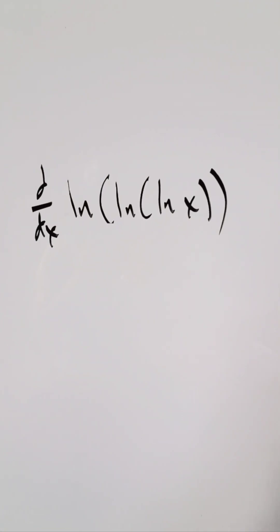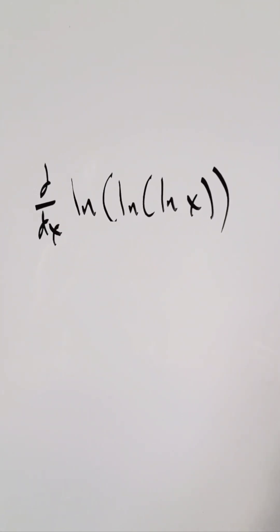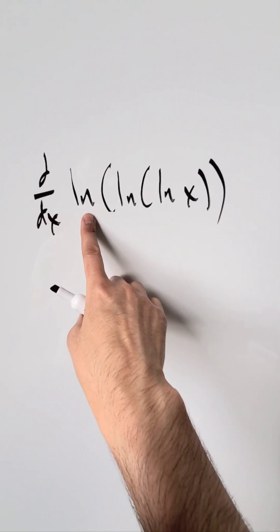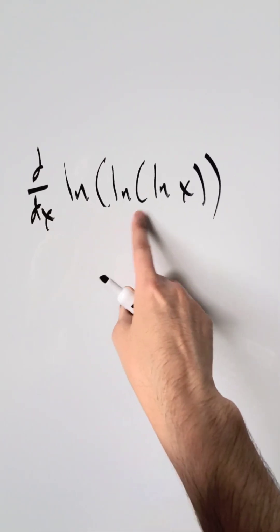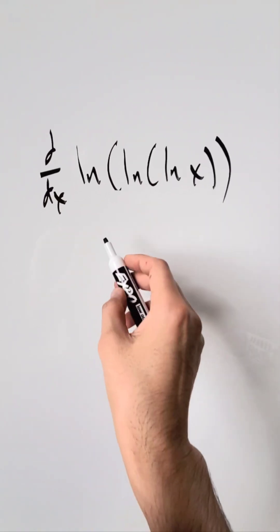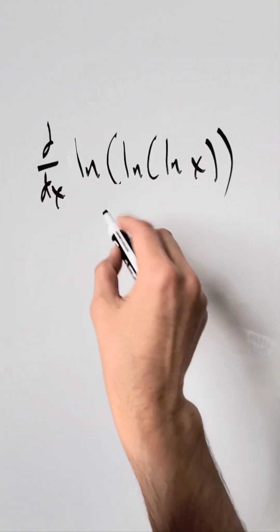We have an interesting composite function and I want to determine its derivative using the chain rule. I have the derivative of natural log of natural log of natural log of x. I am thinking the chain rule.